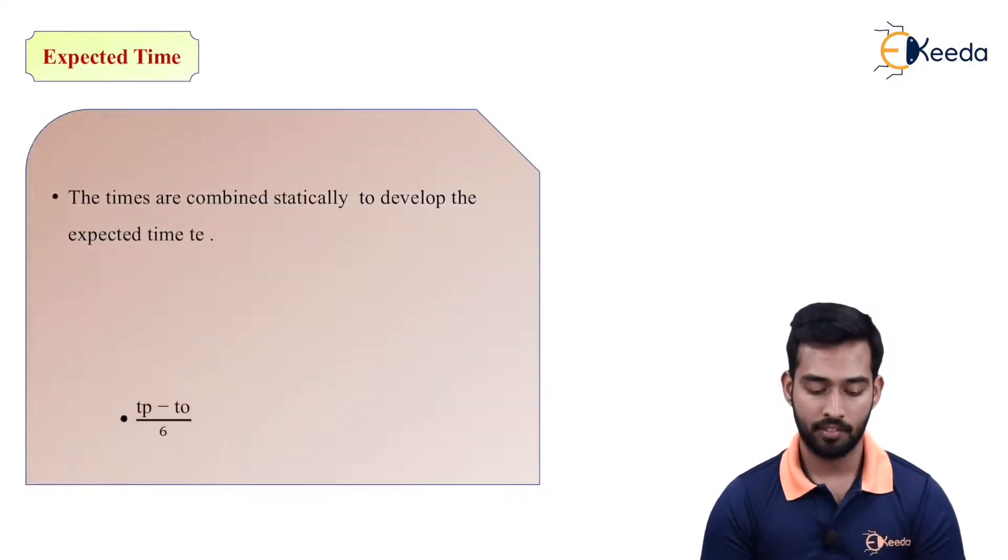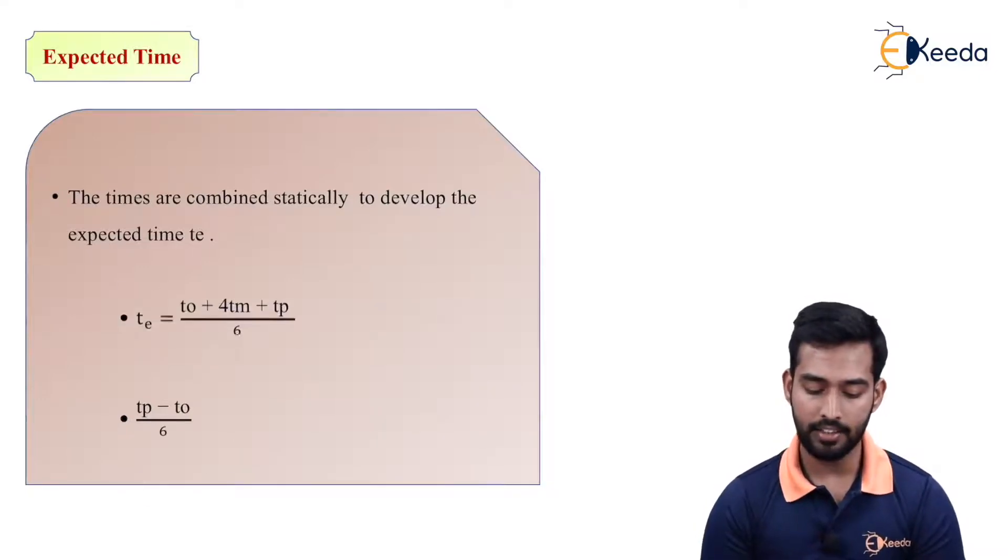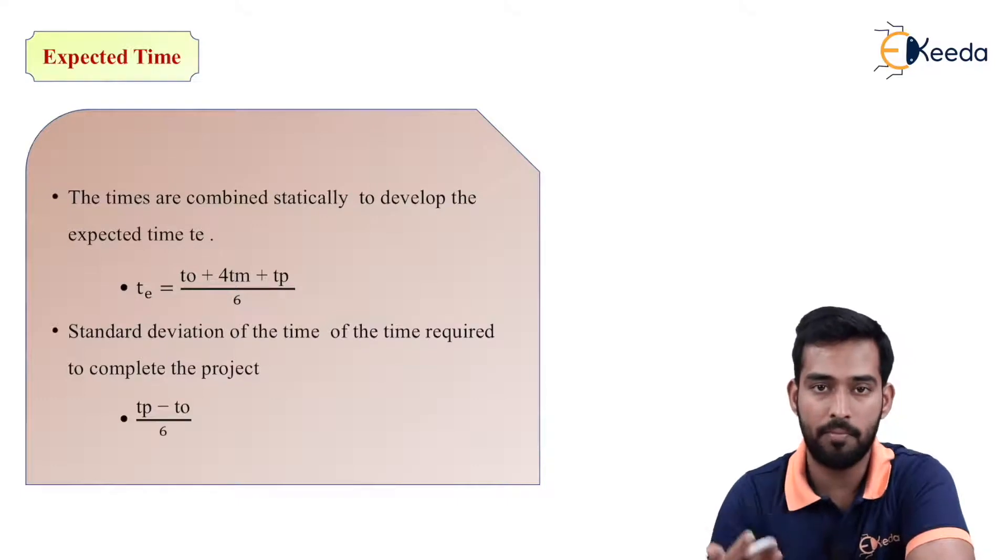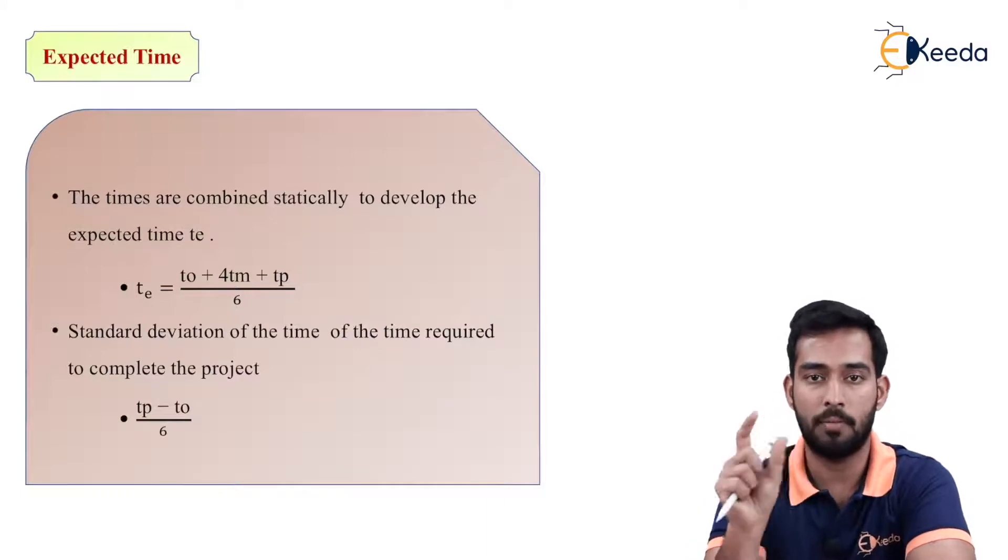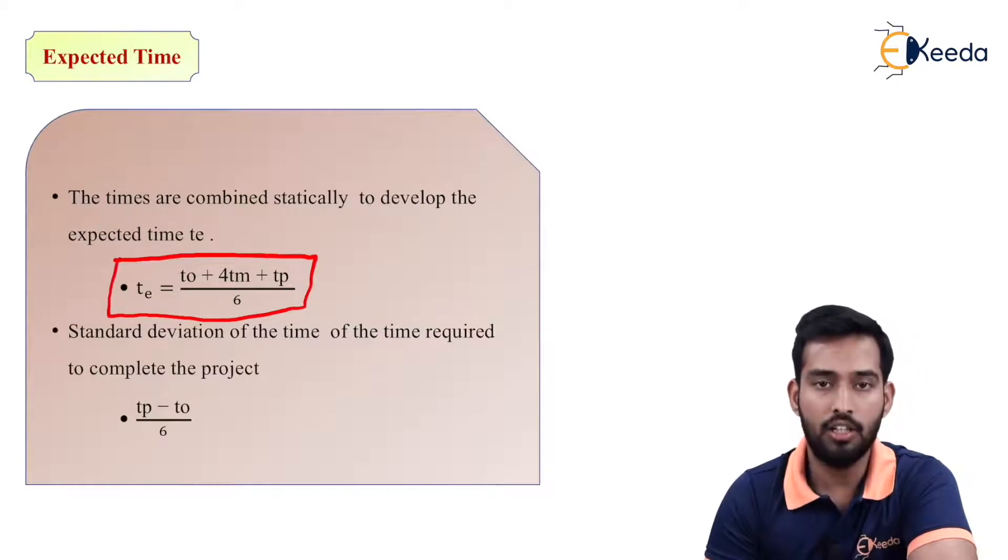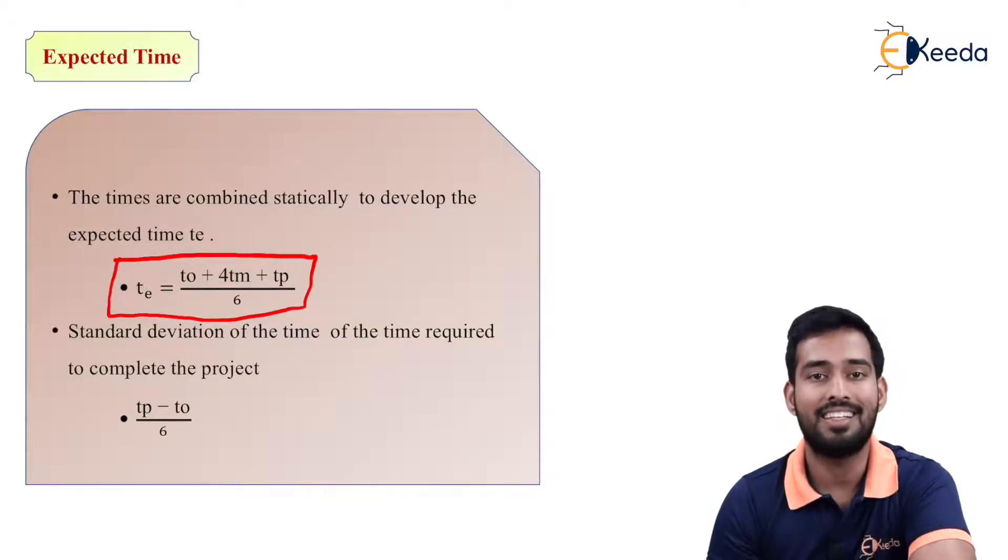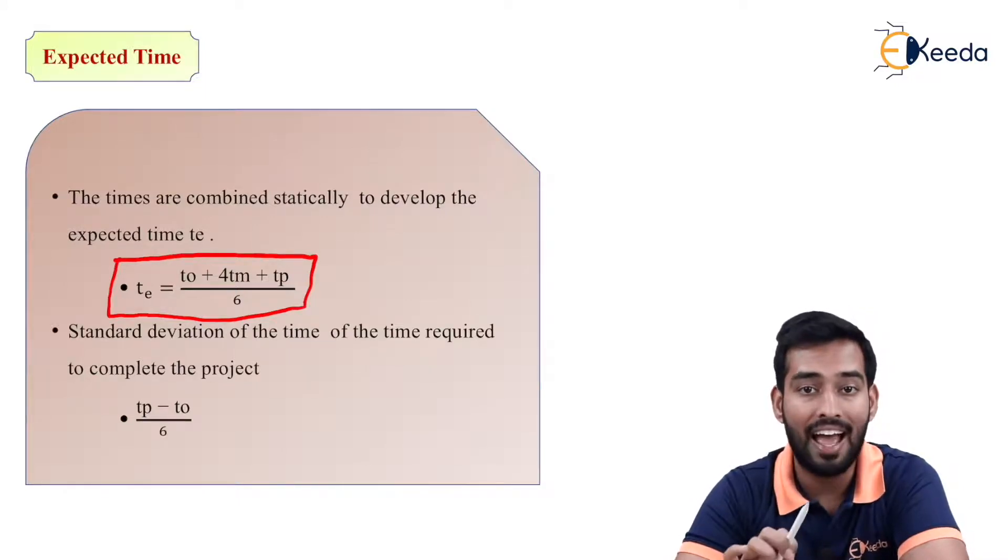Now expected time. The times are combined statistically to develop the expected time TE. So the formula to find TE: TE means expected time of completion. As we have three times, so we have to find the expected time at which the project will complete. The simple formula we have to use is TE equals TO plus 4 into most likely time plus TP divided by 6. This will give us expected time of completion of that particular activity.